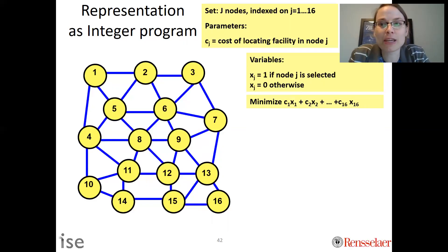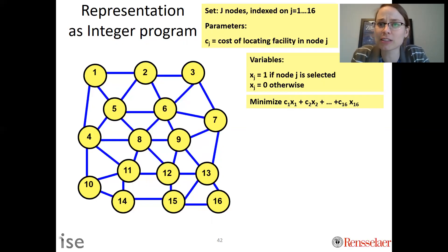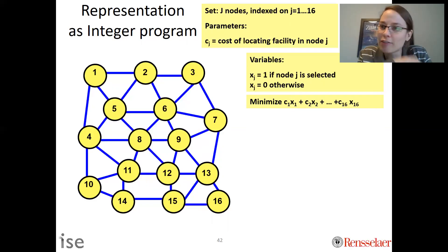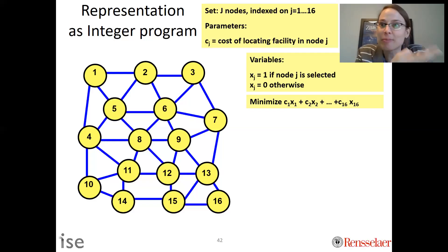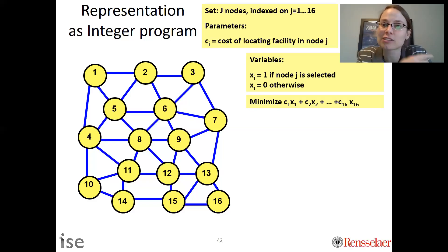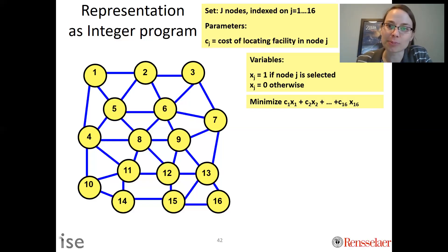We're trying to minimize the total cost of building across all locations. c_1 times x_1 means: if I build in location 1, x_1 becomes 1 and I pay the cost of building in node 1. If I don't build in location 1, x_1 is 0 and I don't pay anything. The objective function is the sum over all potential locations of the binary variable x_j times the cost c_j of building there.